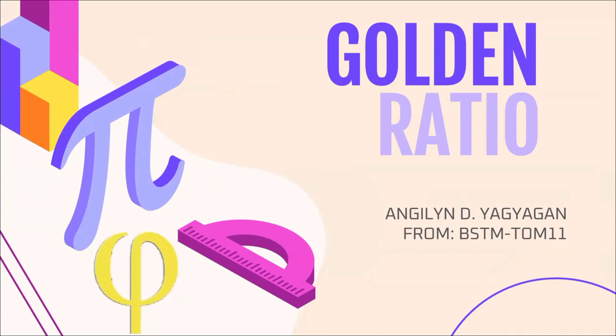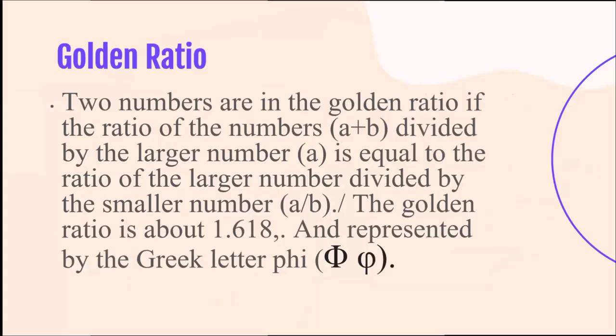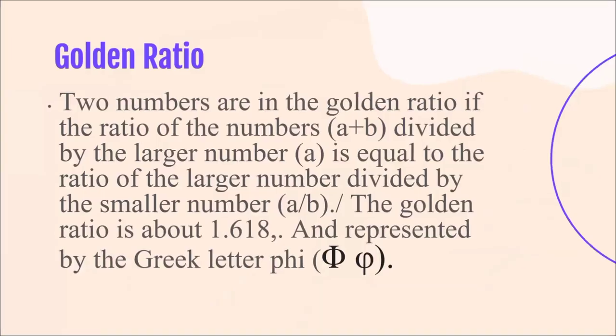So what is the Golden Ratio? This is another concept related to the Fibonacci sequence. The Golden Ratio involves two numbers. Two numbers are in Golden Ratio if the ratio of A plus B divided by the larger number A is equal to the ratio of the larger number A divided by the smaller number B.